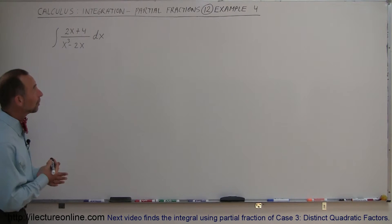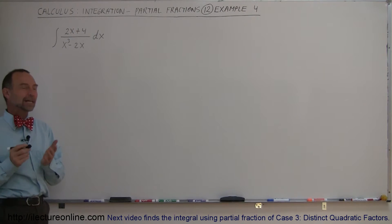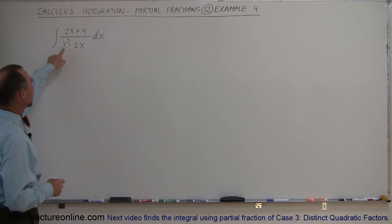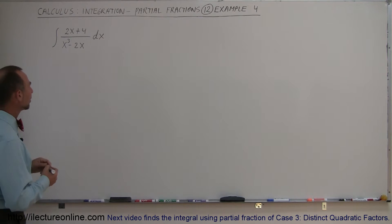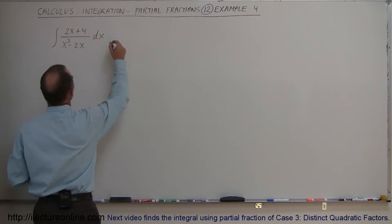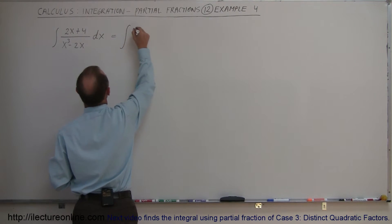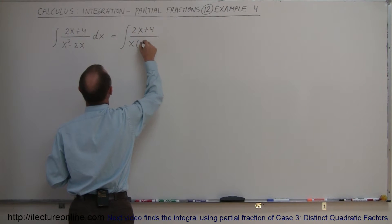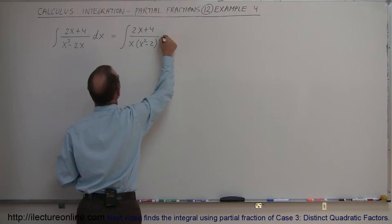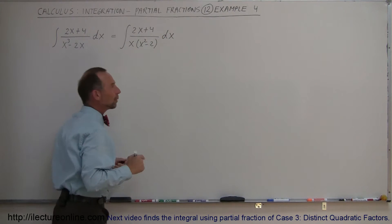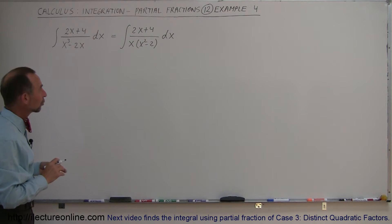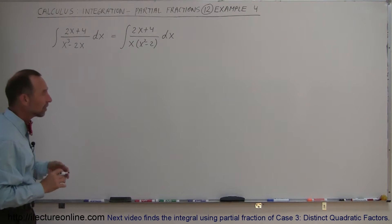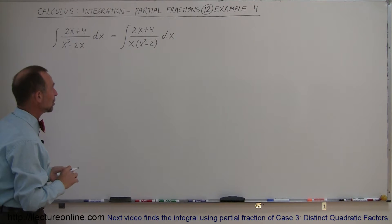Welcome to iLecture Online. Here's our next example of how to work with partial fractions to integrate. Notice we have a slightly different problem — look at the denominator. We have x cubed minus 2x. If we factor that denominator, we get the integral of 2x plus 4 divided by x times x squared minus 2 dx. The denominator now has a quadratic term, which means we have to approach it slightly differently when using partial fractions.